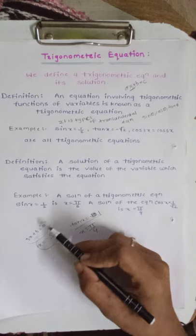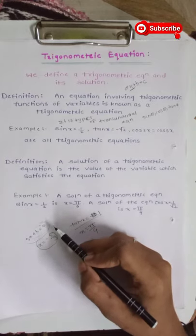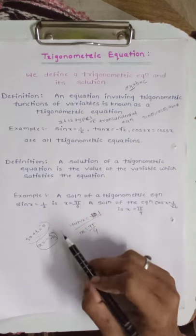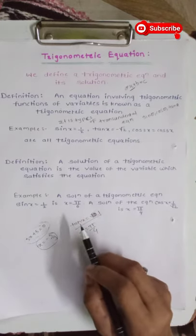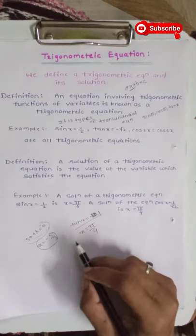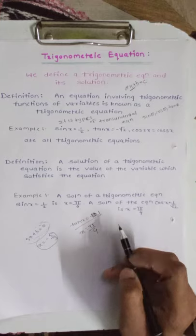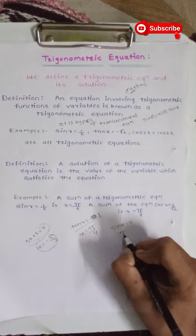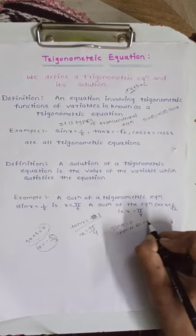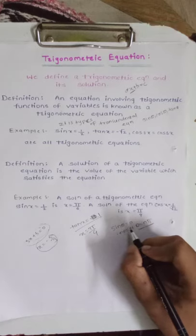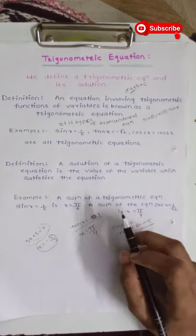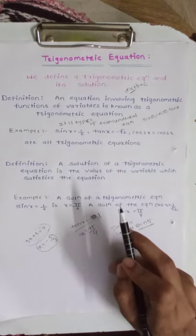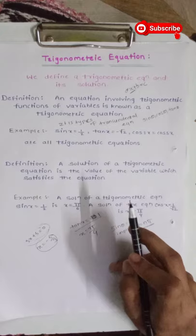In an algebraic equation there are two types of solutions: a finite number of solutions and an infinite number of solutions. Similarly, in a trigonometric equation there can also be a finite number of solutions and an infinite number of solutions. The reason a trigonometric equation can have an infinite number of solutions is its periodicity. For example, sin theta is equal to 0 implies theta is equal to n pi, which reflects the periodicity of sin theta.